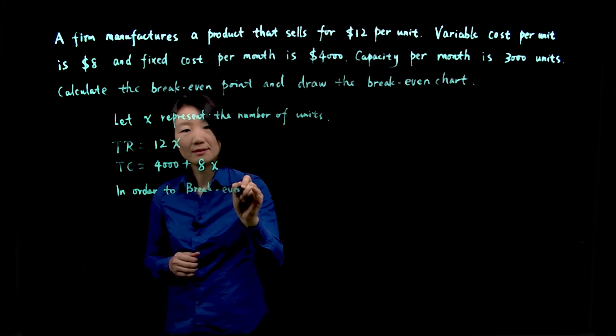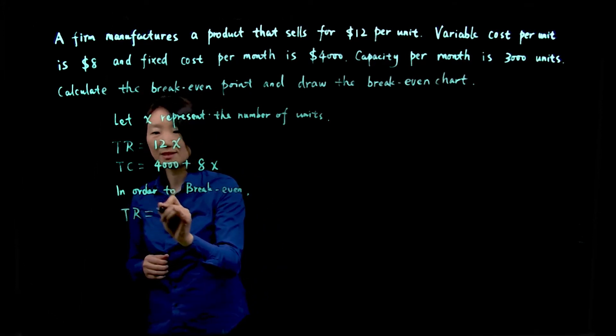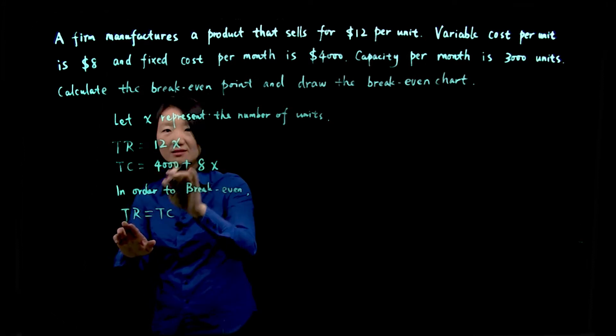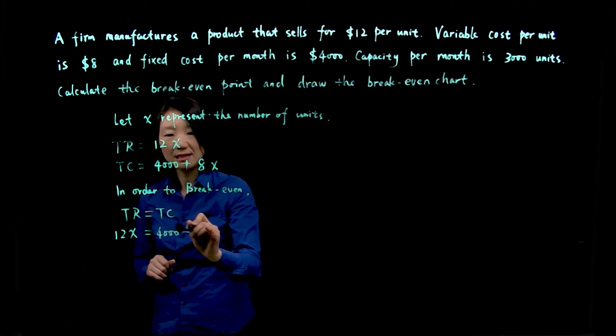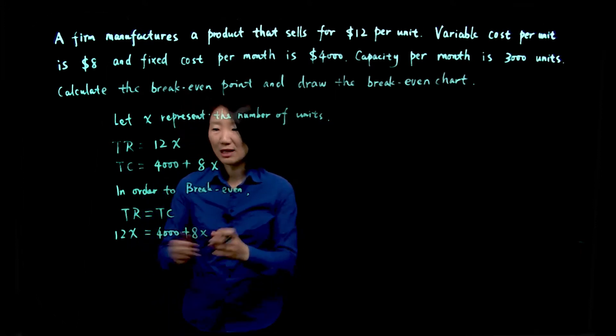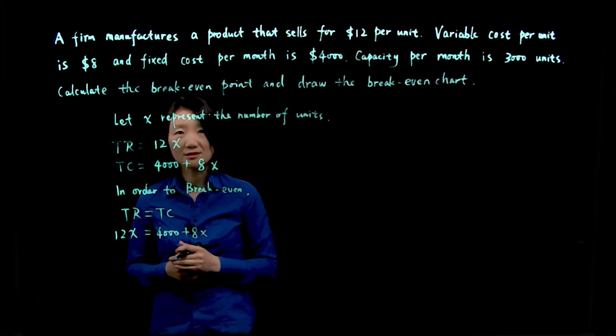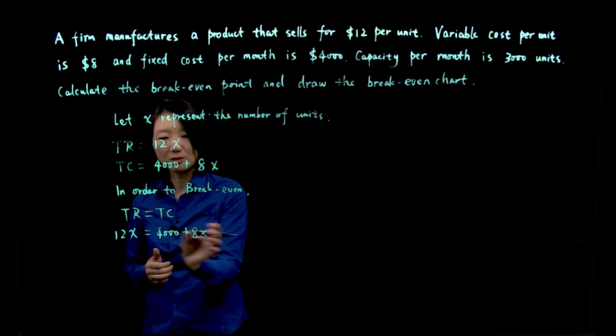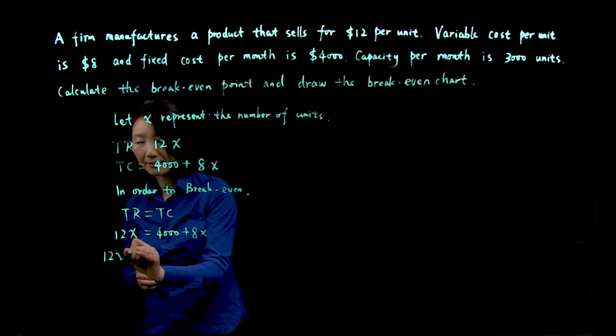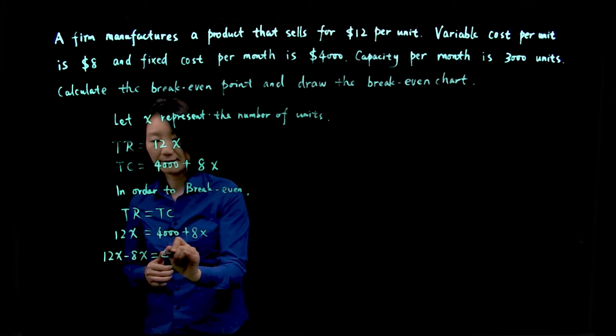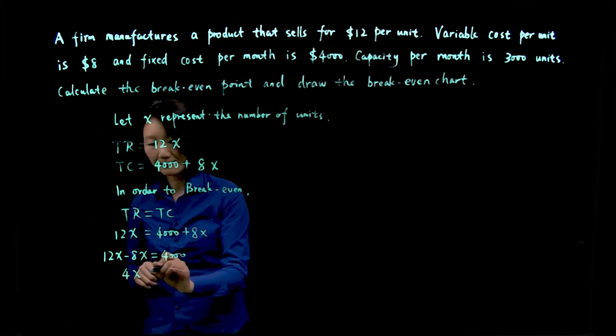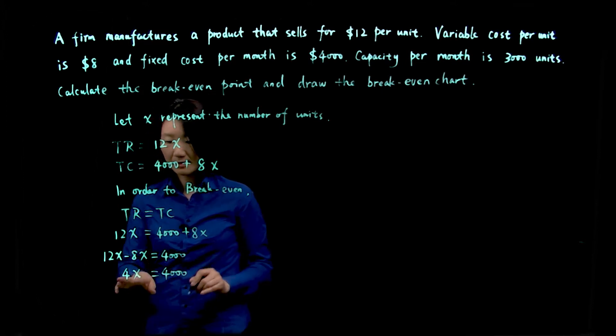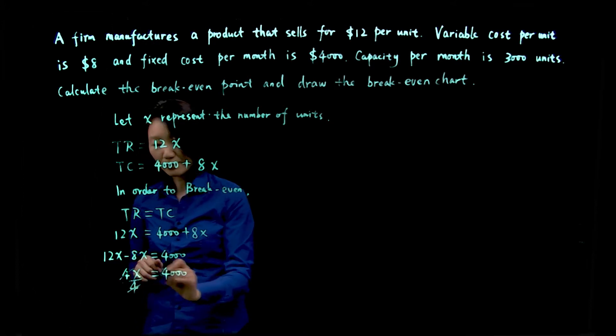So in order to break-even, total revenue has to be the same as total cost. Now let's plug in all these functions: 12x is total revenue, total cost is $4,000 plus 8x. Now we have an equation with one variable, x. We need to solve it. So we'll isolate x on one side, we'll move 8x to the left hand side. So 12x minus 8x gives us 4x. Both sides divide by 4, and x equals 1,000.